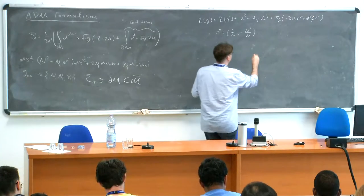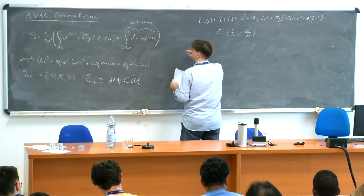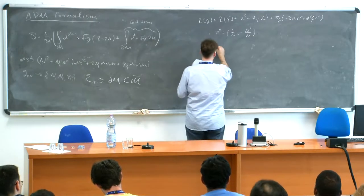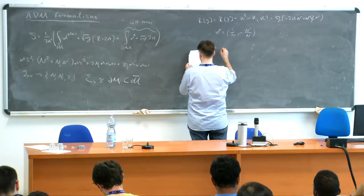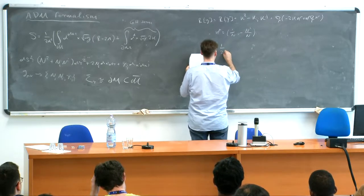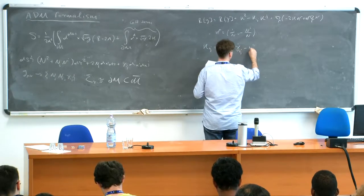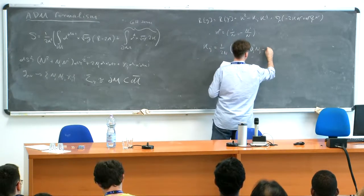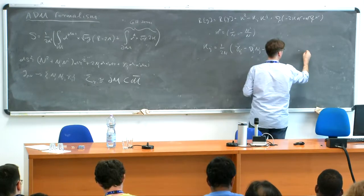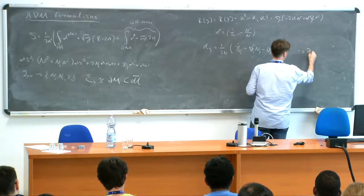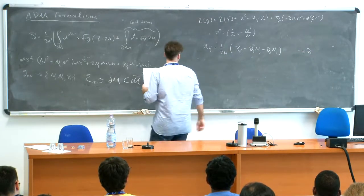So here, k — remember — because the term that appears here is the trace of this tensor, this is the extrinsic curvature. It takes the form: gamma-dot_ij minus n_i n_j, where dot is defined to be the radial derivative here.